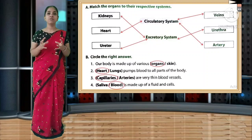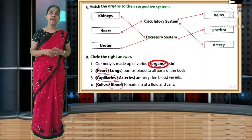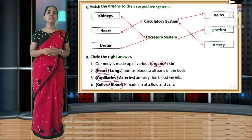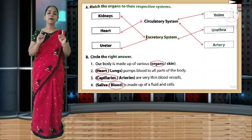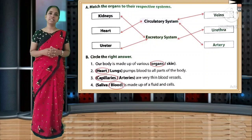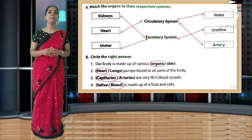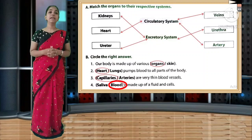Circle the right answer. First: our body is made up of various organs. Spelling: O-R-G-A-N-S. Second: heart pumps blood to all parts of the body. Spelling: H-E-A-R-T. Third: capillaries are very thin blood vessels. Spelling: C-A-P-I-L-L-A-R-I-E-S. Fourth: blood is made up of fluid and cells. Spelling: B-L-O-O-D.